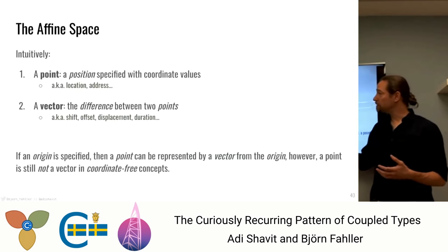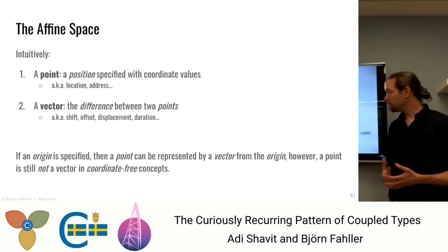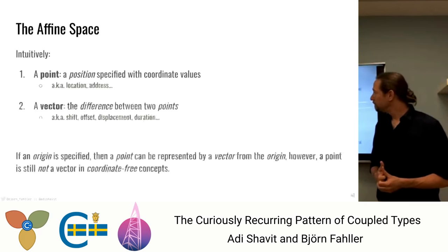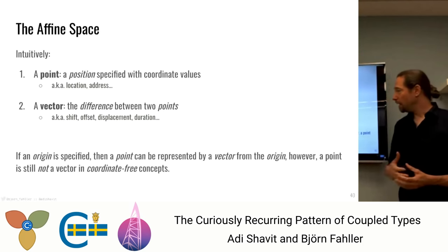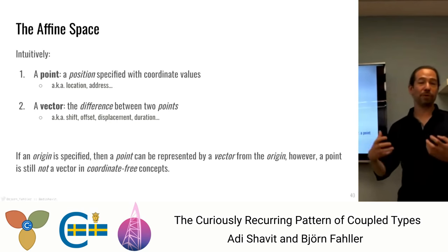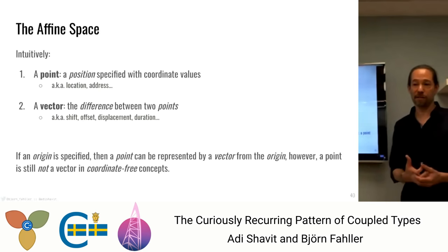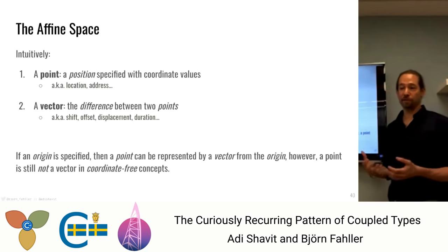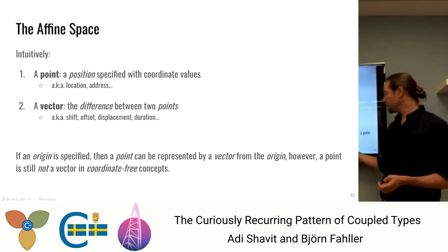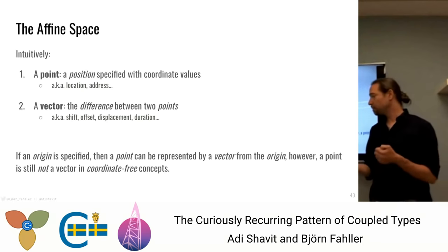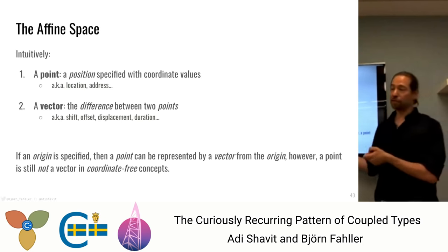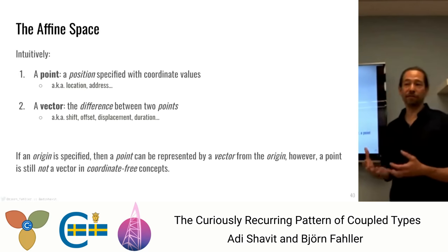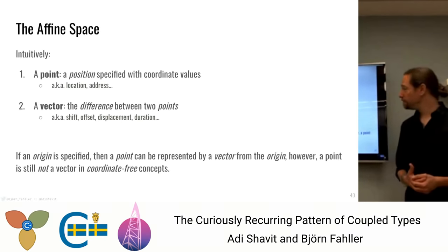These two types have very intimate relationships. There's a comment that sometimes we don't necessarily have an origin, because when we have this separation between positions and displacements, we don't really need to know where the origin is. Affine space is sometimes called 'a vector space that forgot its origin.' Even if the origin is known, any point can be represented as a vector from the origin. However, the point is still not a vector in the coordinate-free space — even though your representation might be a tuple of two numbers, these are separate entities. They behave differently and have different algebraic rules.